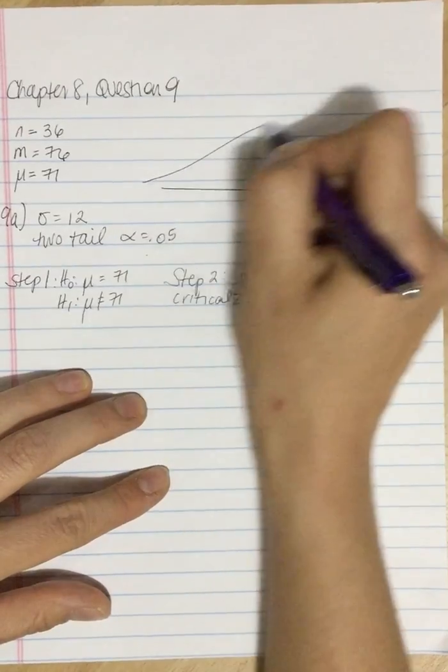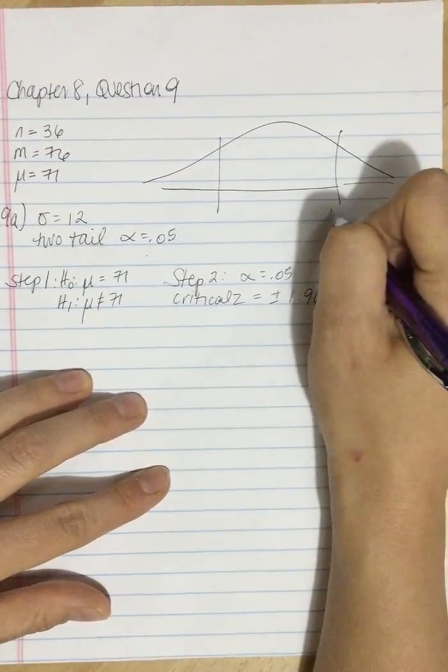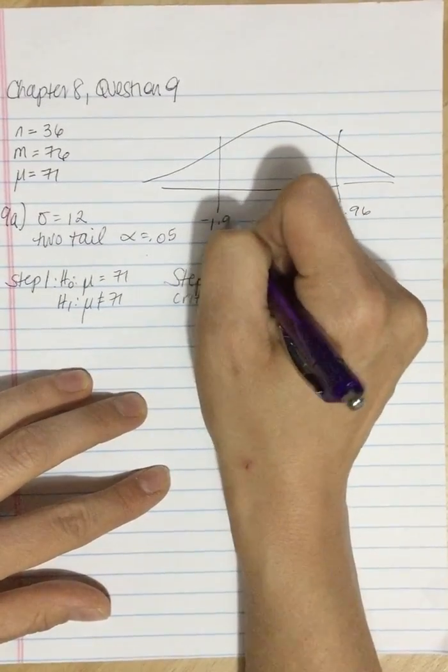So if we draw that out, what that looks like is we've got positive 1.96, we've got negative 1.96.